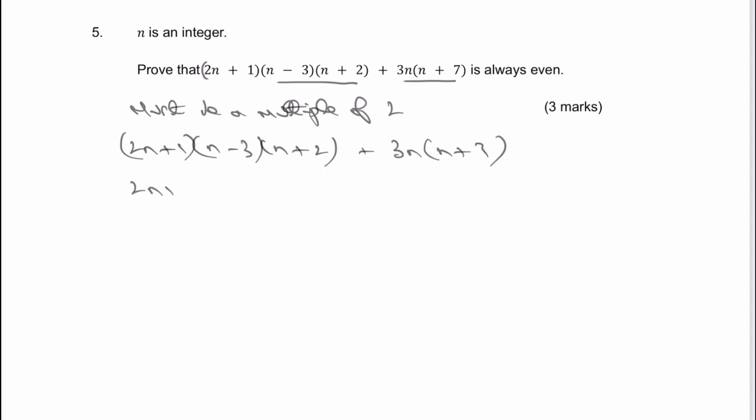So let's have a look at how that expands. Well 2n plus 1, perfectly fine. I'm going to leave it. And then I've got n times n is going to give me n squared, multiplied by n plus 2 is n plus 2n, is plus 2n, minus 3n, minus 6. And then the expansion of the second expression there is going to be 3n squared plus 21n.